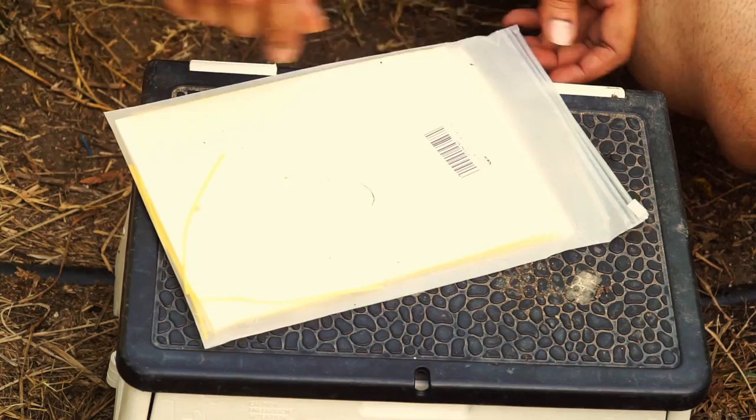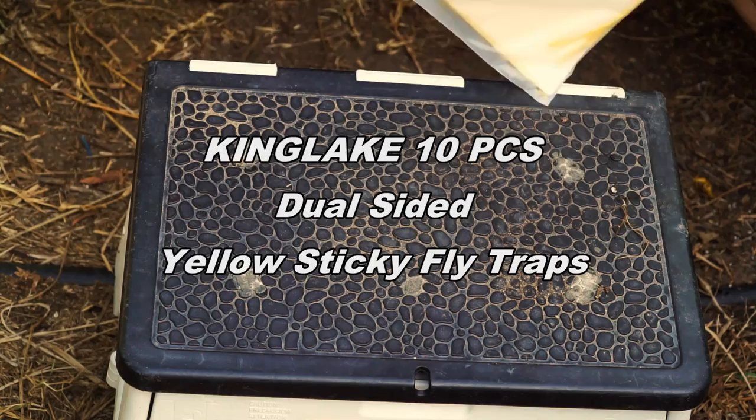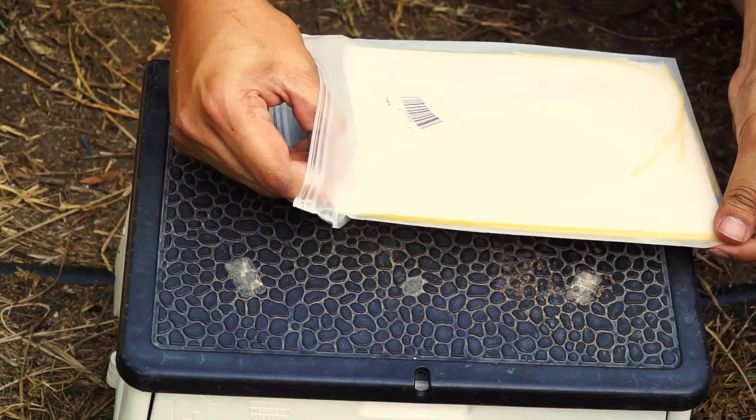This product is the sticky white fly aphid trap that claims to control white flies, aphids, fungus gnats, leaf miners, and thrips. It comes in a pack of 10, and the dimensions are in the video description. You can also see a link to the product in the video description if you want to buy it.